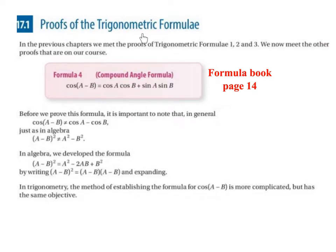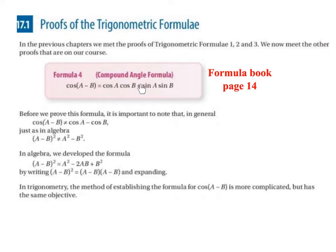Proofs of the trigonometric formulae. In the previous chapters, we met the proofs of trigonometric formulae 1, 2, and 3. We now meet the other proofs that are on our course. We're going to start with formula 4, which is known as the compound angle formula, and it states that cos(a - b) = cos(a)cos(b) + sin(a)sin(b). This can be found on page 14 of your formula book.